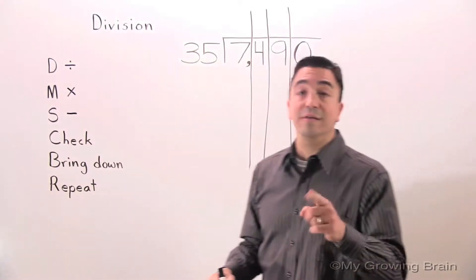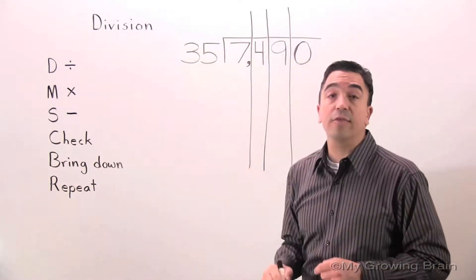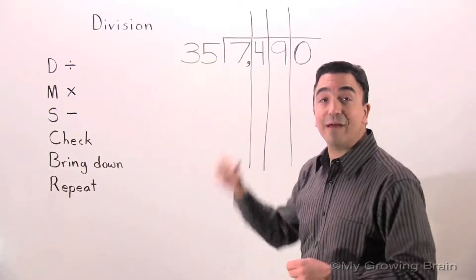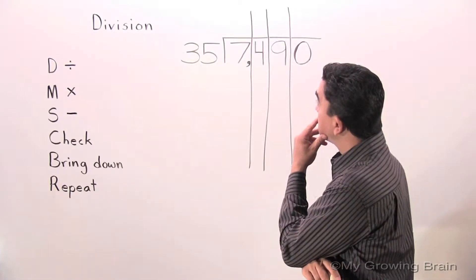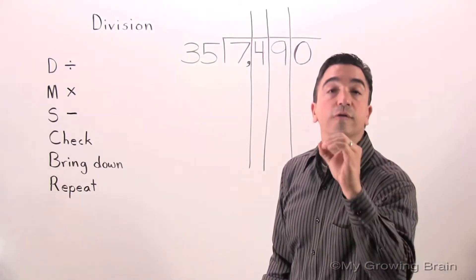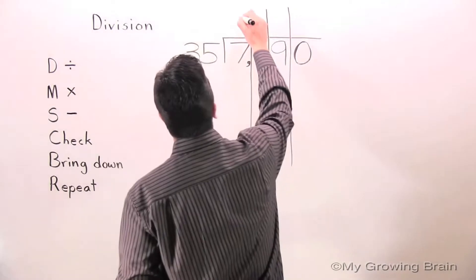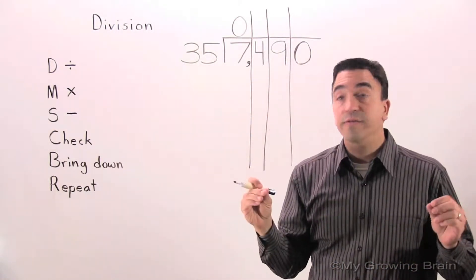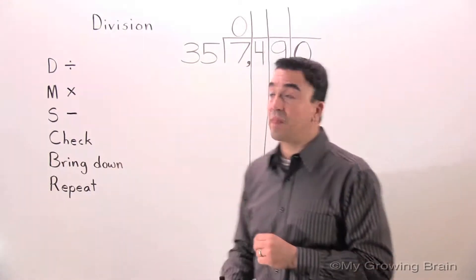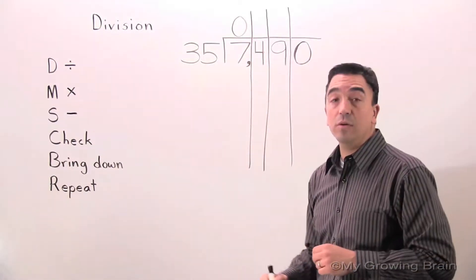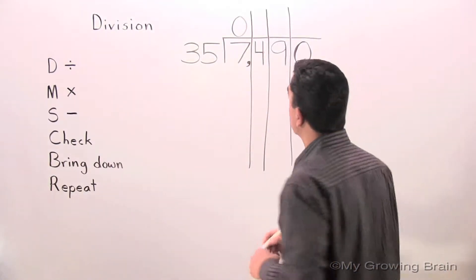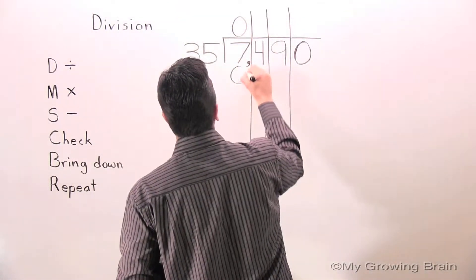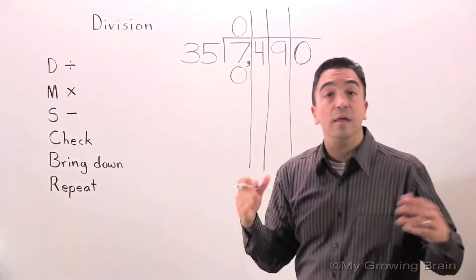Our first step will be to divide: 7 divided by 35, or 35 into 7. Can't do it! Use a 0. Next step. Multiply. 35 times 0 equals 0.